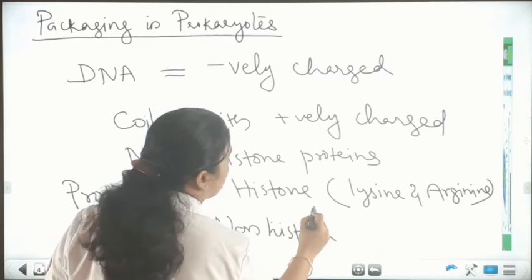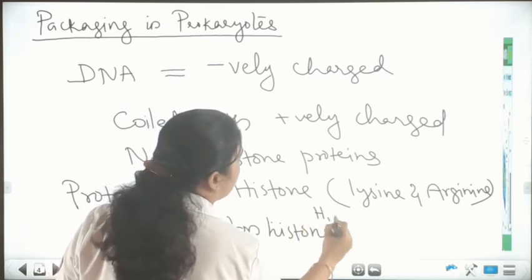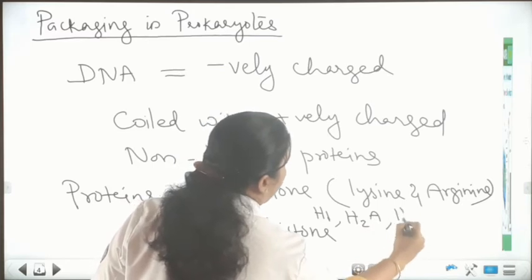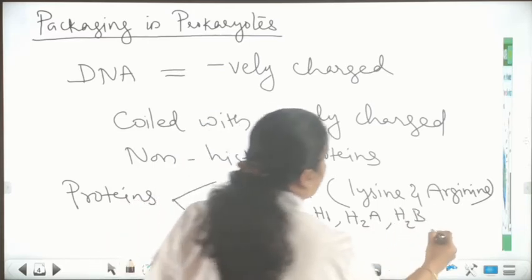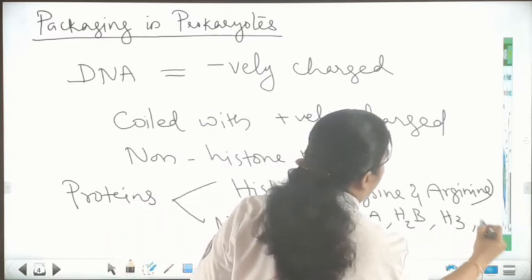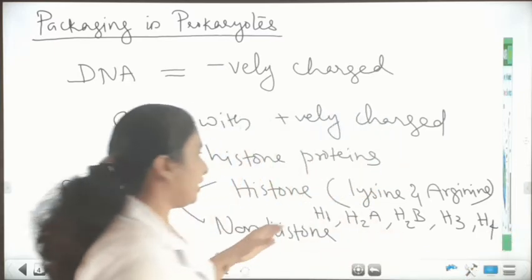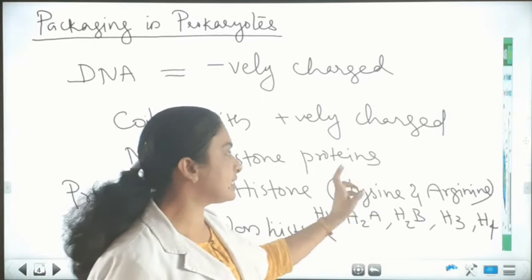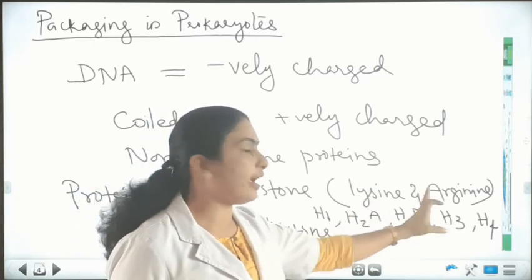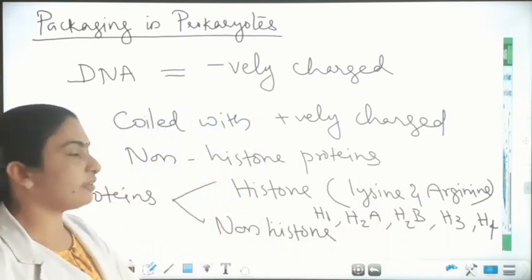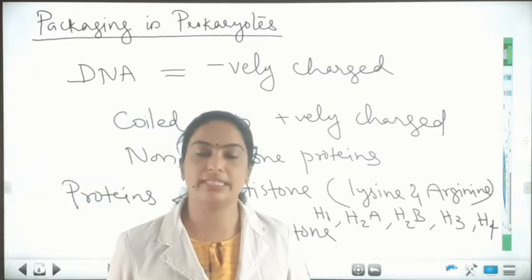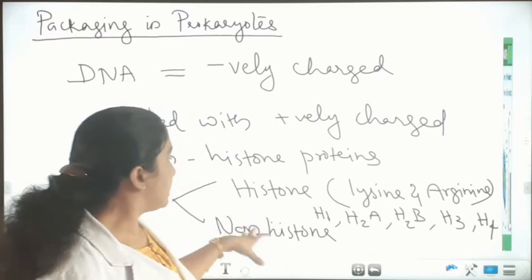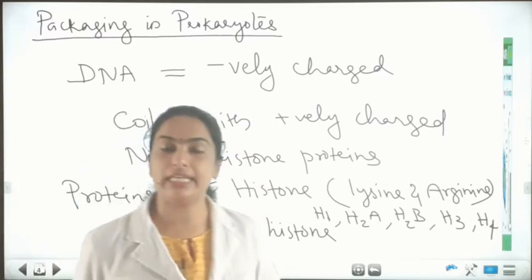There are different types of histone proteins: H1, H2A, H2B, H3, and H4. These histone proteins consist of lysine and arginine. In non-histone proteins, there are no amino acids such as lysine and arginine. And these histones are positively charged.